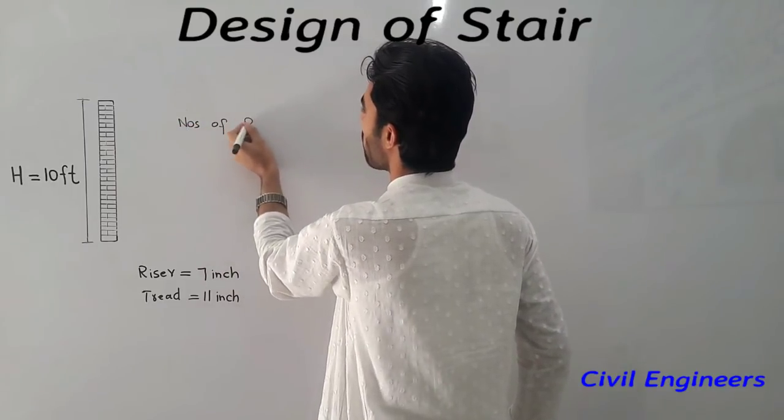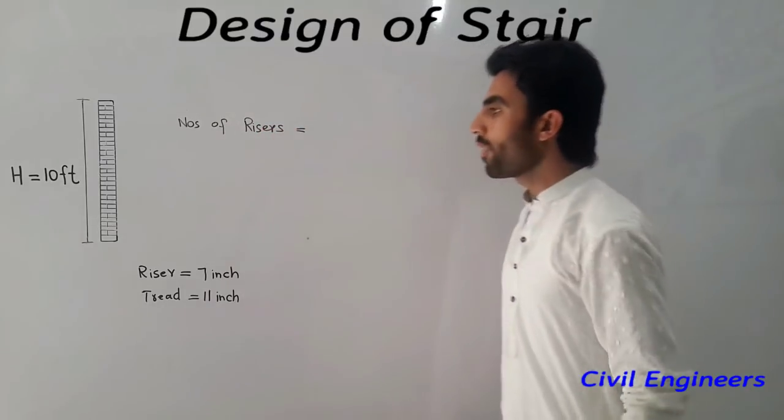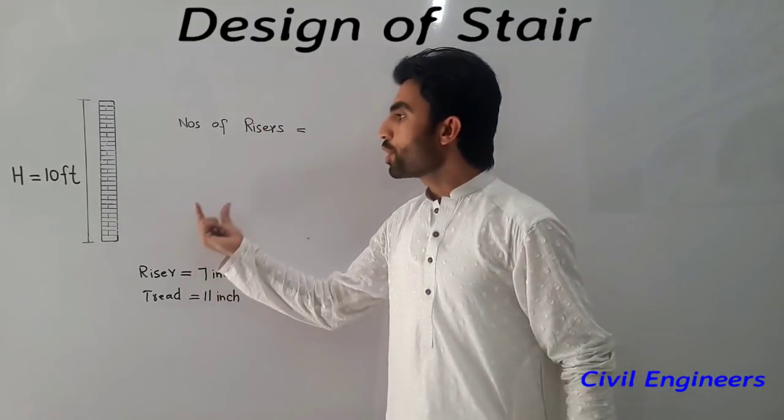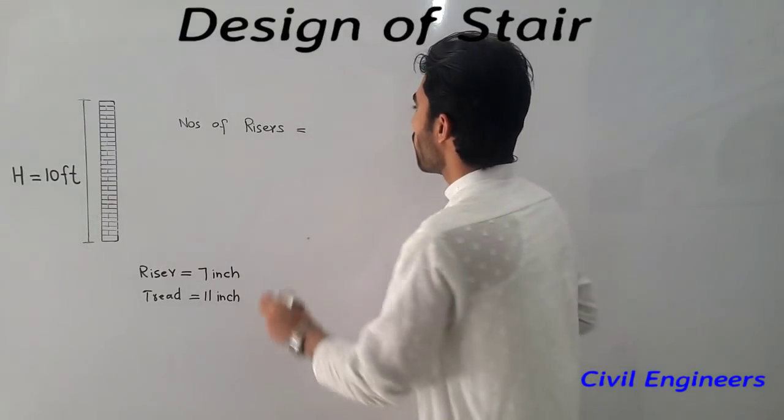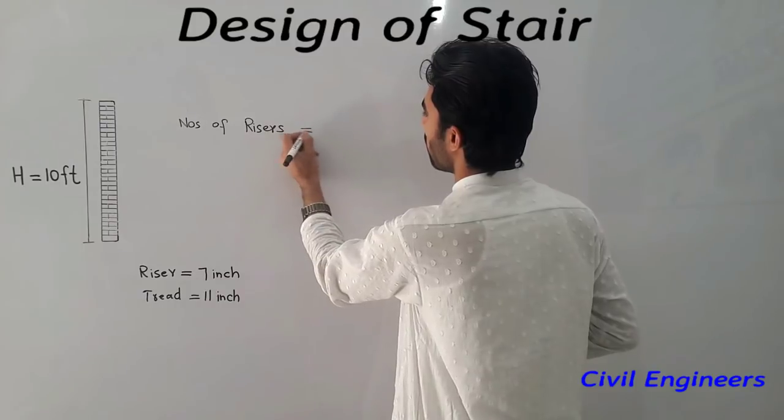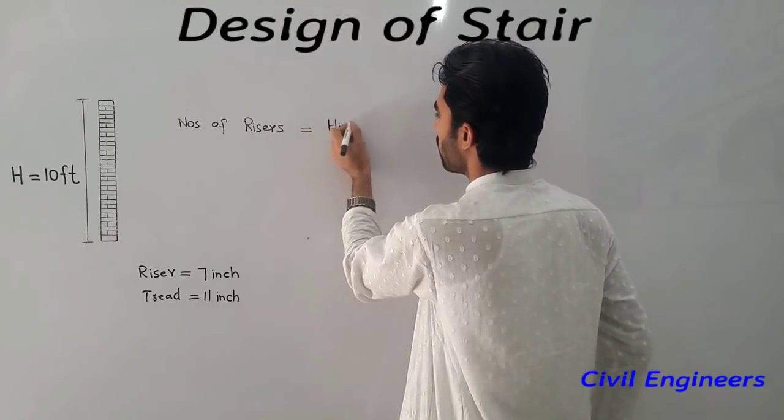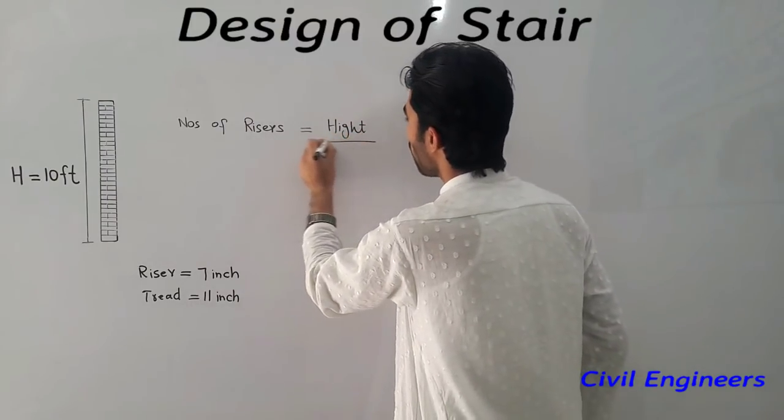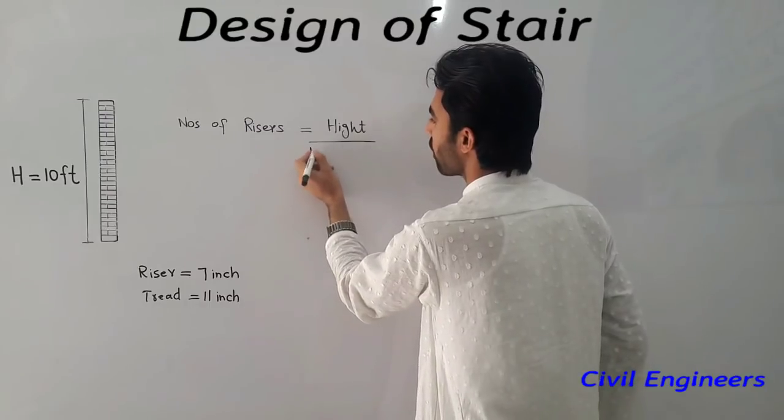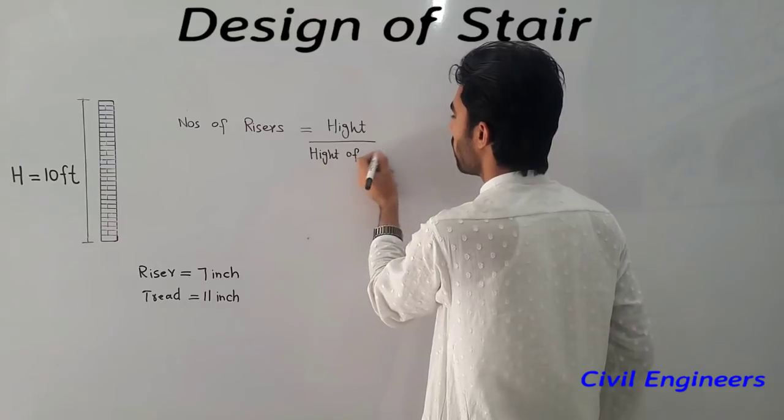One thing to remember: when you want to find out the number of risers, the formula is total height of the wall divided by height of riser.